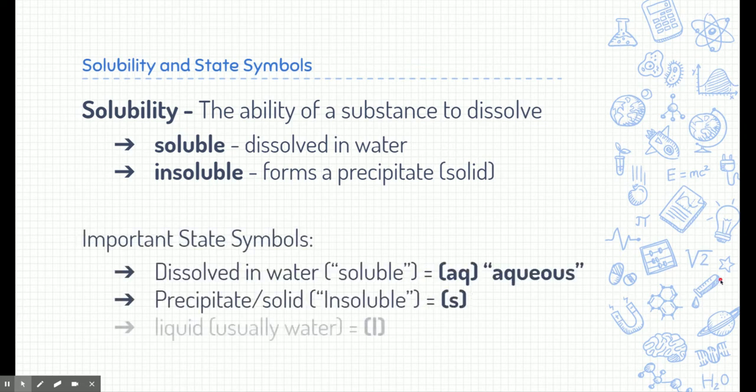You need to know some important state symbols. These symbols are written next to compounds to designate what state they're in. Aqueous, or AQ, means the substance is dissolved in water, or soluble. S is a solid, or insoluble — another name for a solid is a precipitate. L is a liquid, and in chemistry liquids are usually water or the dissolving medium. G represents a gas.